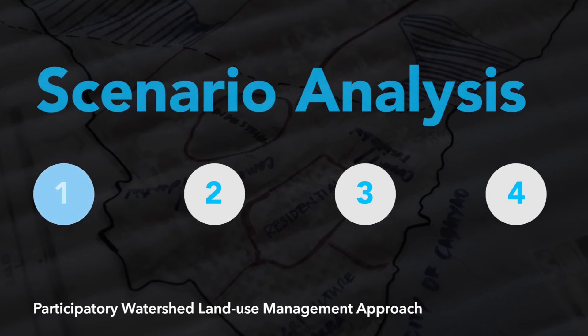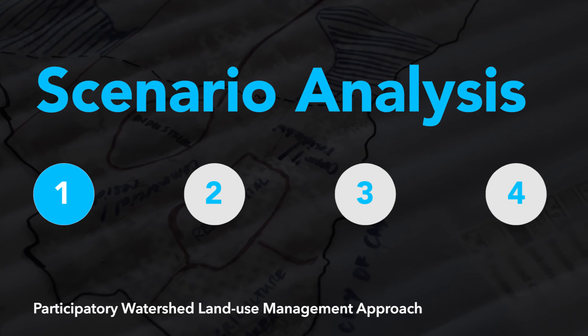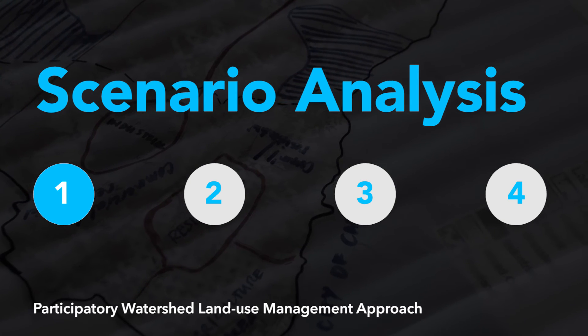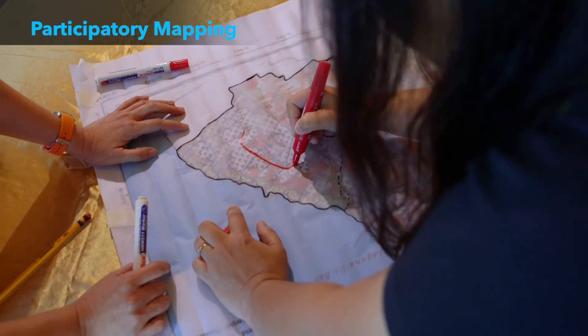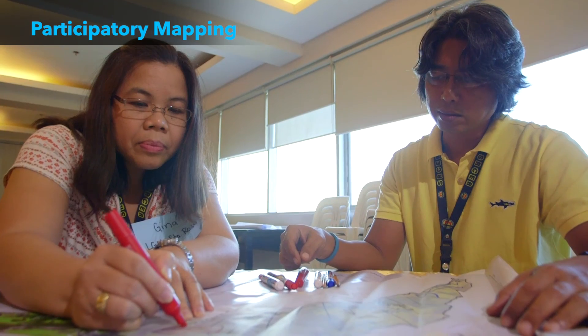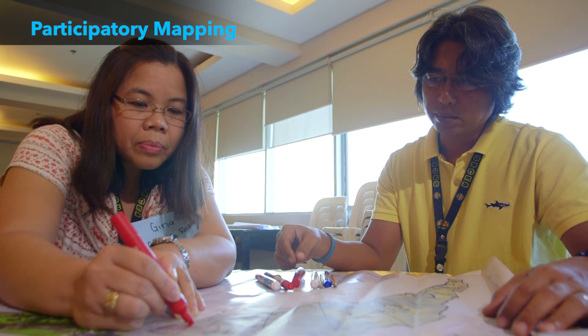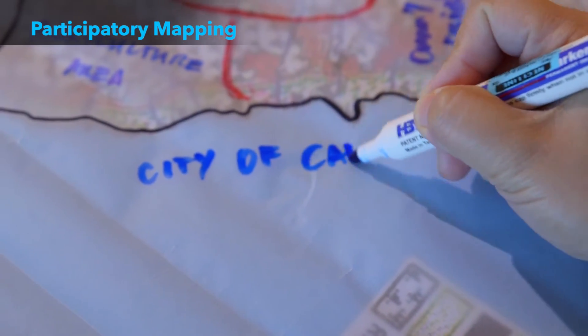The first step of this approach is scenario analysis, which aims to prepare a future scenario of land use in a watershed. To achieve this, a participatory mapping method is utilized to translate the development plans of the local governments into future land use maps. This step provides a useful tool to engage local officials in articulating their future land use and development plans into a spatial model.